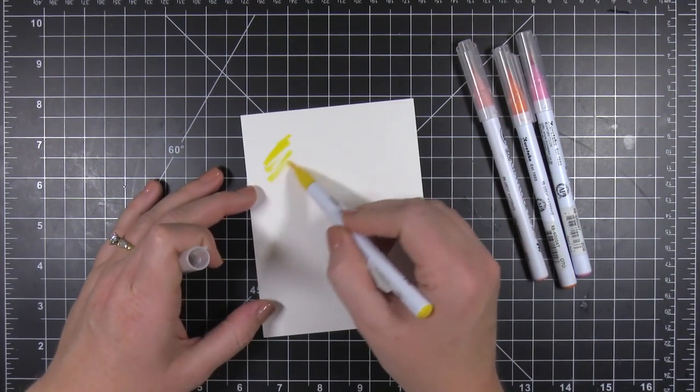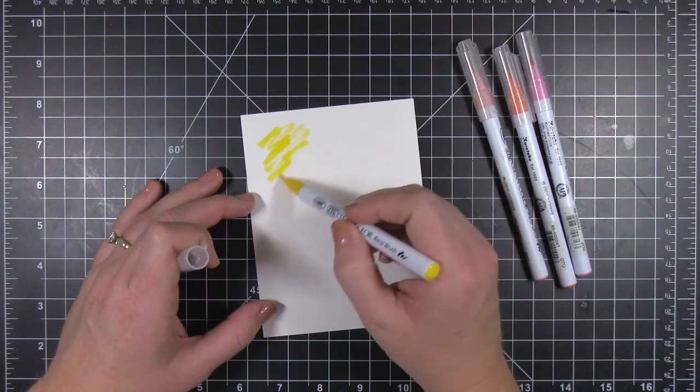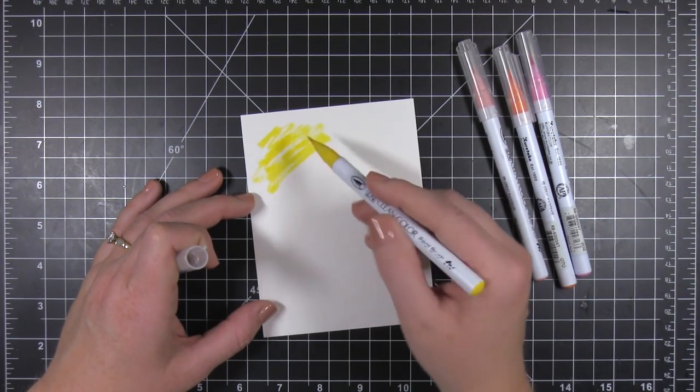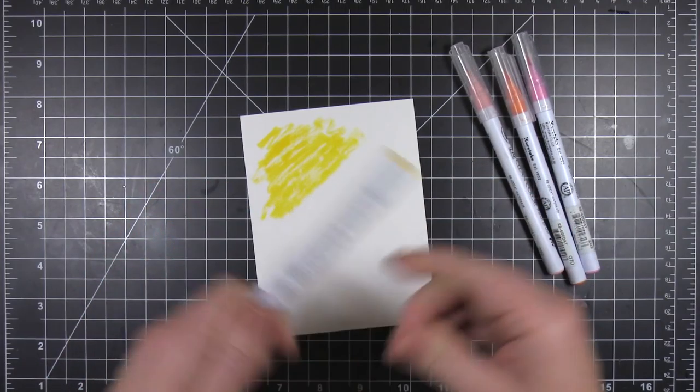I'm going to create a fun acetate card to say hello to summer, so I'm using these bright, fun, summery colors, and I'm going to create a watercolor background to put on the front of my acetate card.